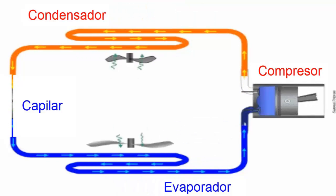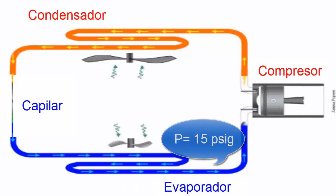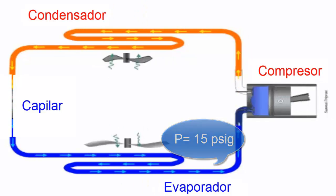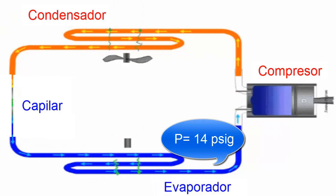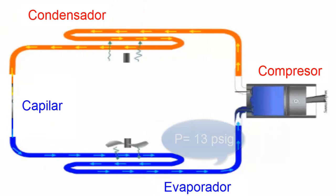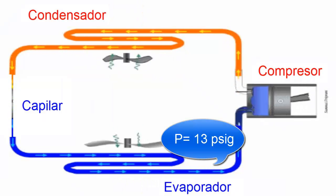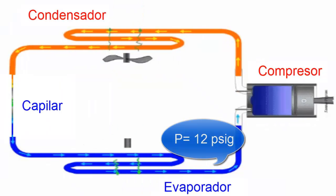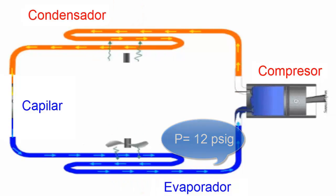2. When a partial obstruction occurs in the capillary tube, the pressure in the evaporator starts to decrease significantly. The pressure, initially 15 pounds per square inch, progressively decreases to 14, 13, and so on. This happens because there is less refrigerant available in the evaporator due to the obstruction.